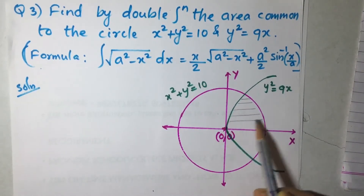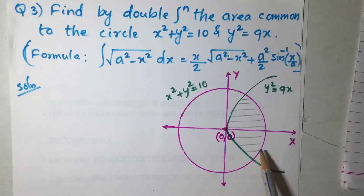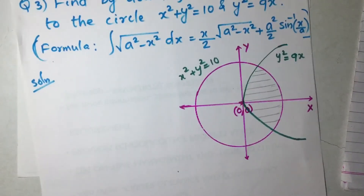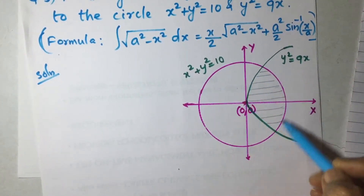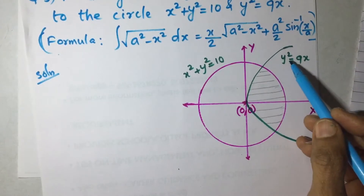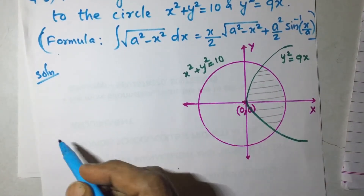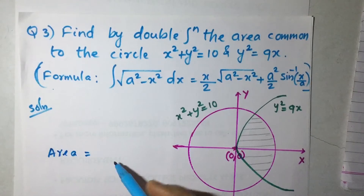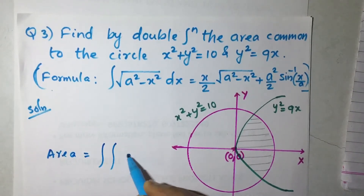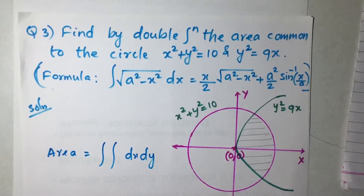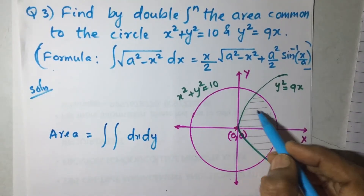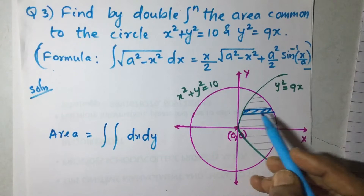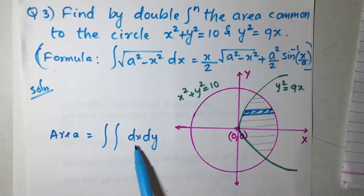The area is equal to the double integral over dx dy. Since we are using dx dy order, we draw a strip parallel to the x-axis. Depending on the movement of this strip, we can find the limits for x and y.